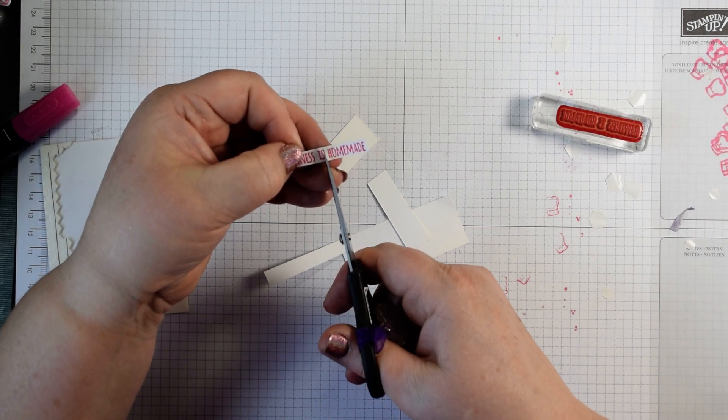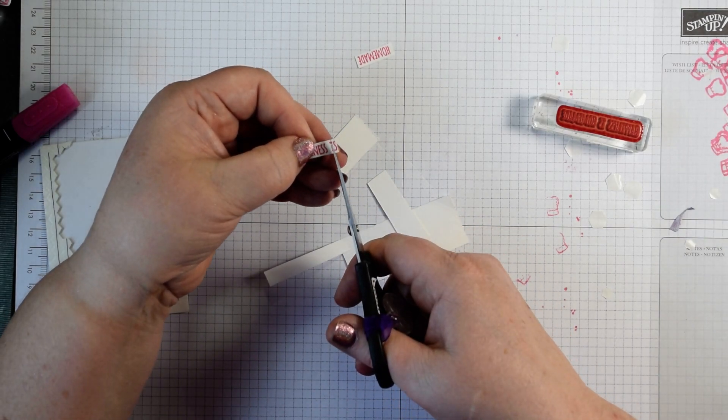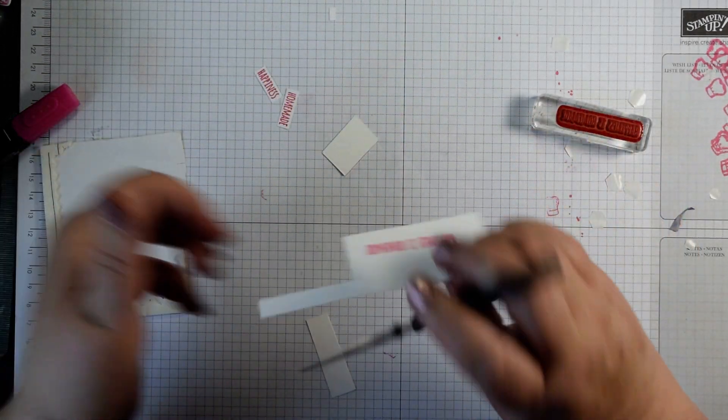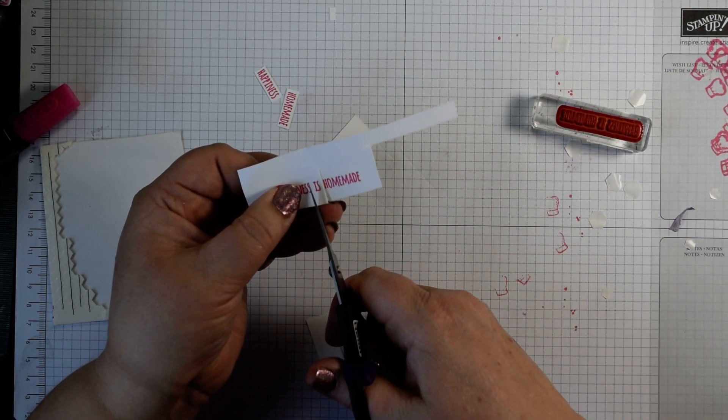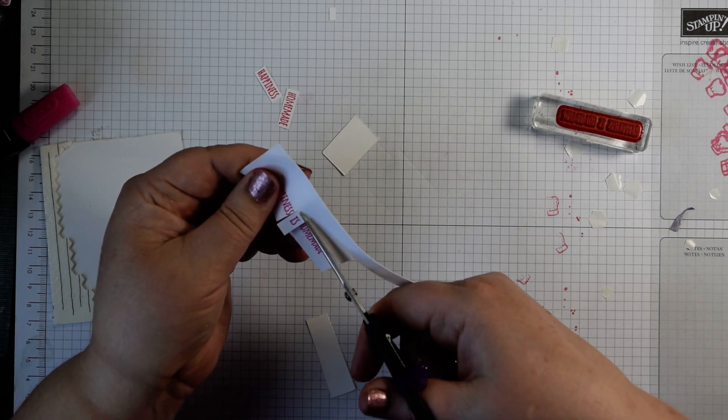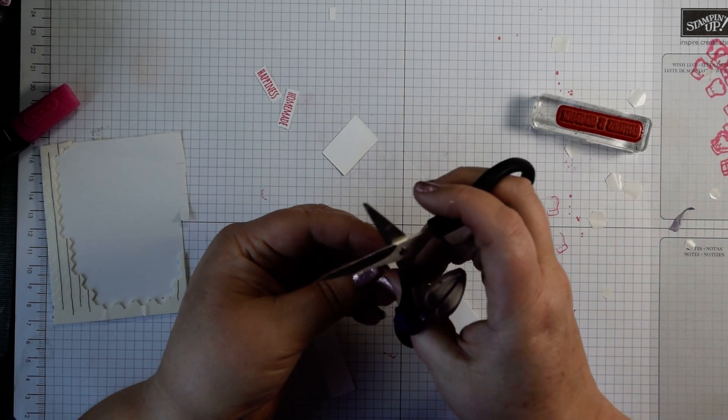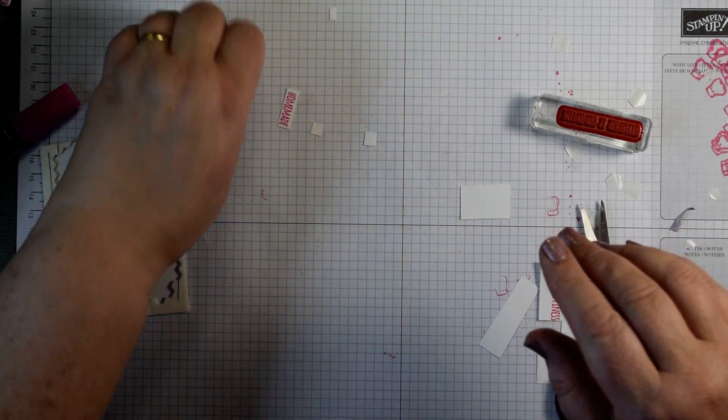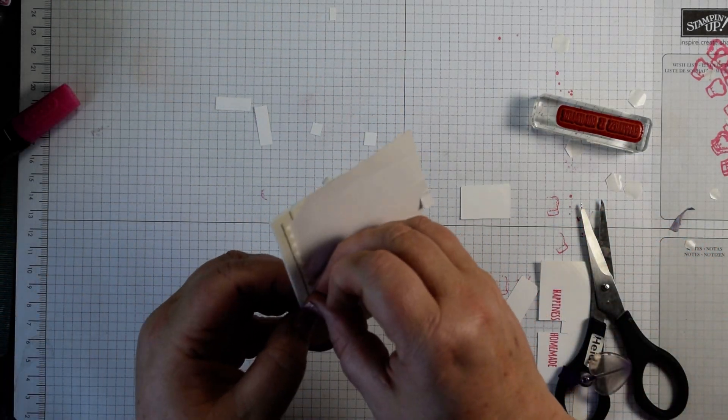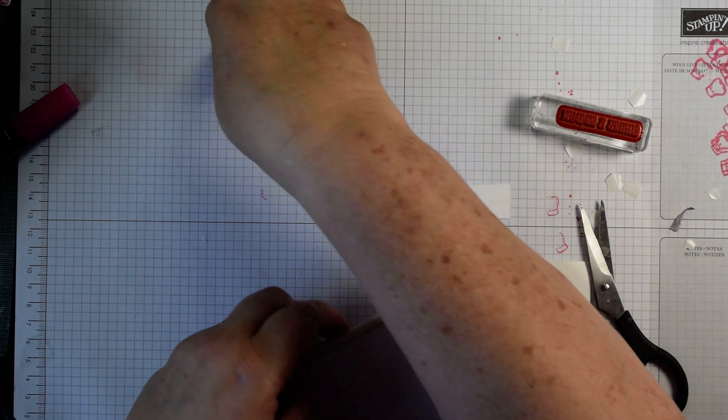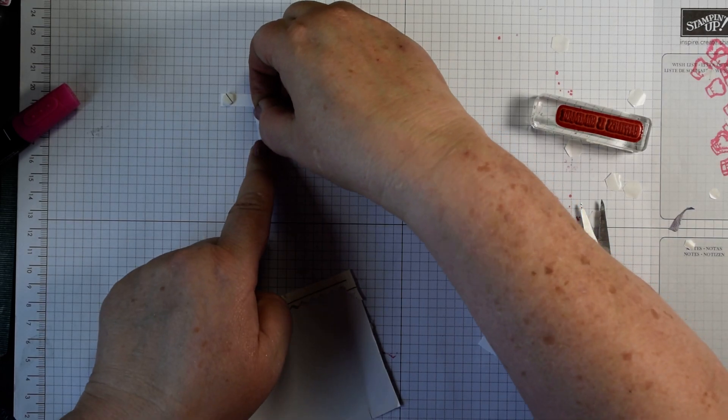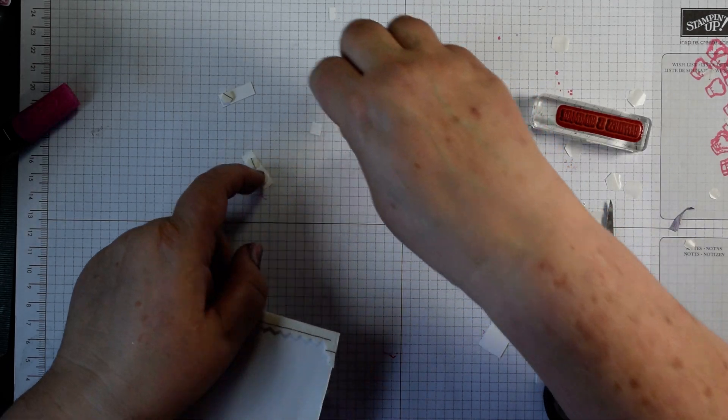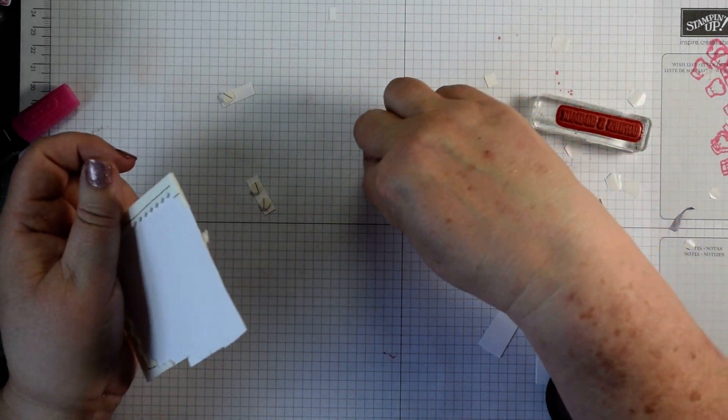What I do is for the big words I cut close to the is. Get my homemade and happiness and then for my is I cut close to the other words. That way it just gives me a slightly bigger piece of card to work with when I'm adding my dimensionals onto those as well. Now obviously if you wanted to you could always pop them stamped straight onto the label, but this does mean that if you get any issues with your stamping then you're okay because you're only attaching them on.